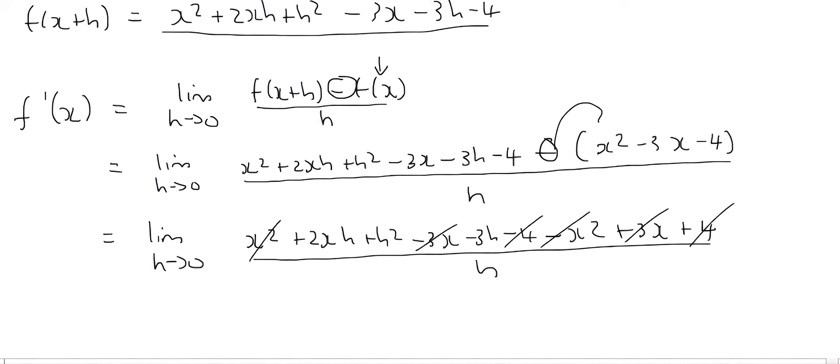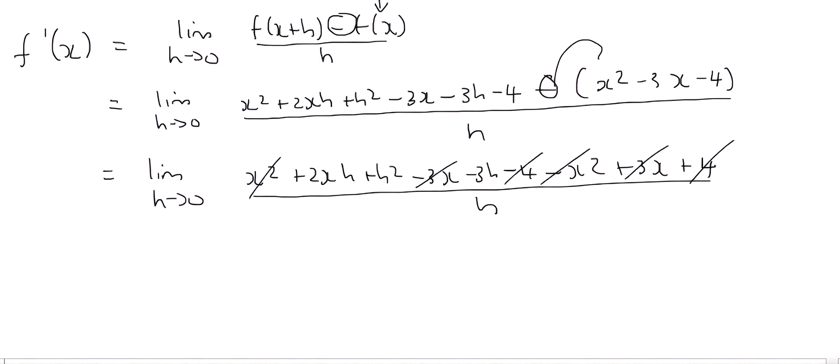So all that we have left, we have to say equals to lim h goes to 0. And then we only have 2xh plus h squared minus 3h. Don't forget about that little one there. And that's all that we have left. And then at the bottom we have h.